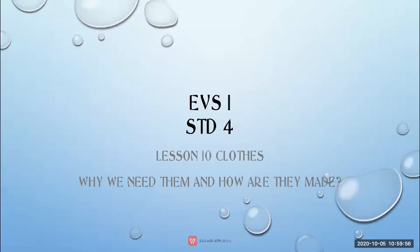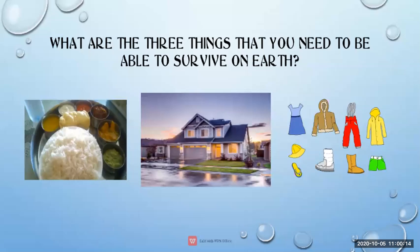Today we are learning about clothes — why we need them and how they are made. What are the three things you need to survive on Earth? The first chapter taught us: food, shelter, and clothes. We also need water and air. These are the things we need every day — food, water, air, shelter, and clothes.